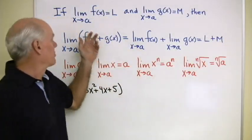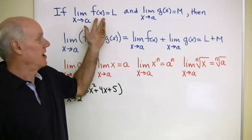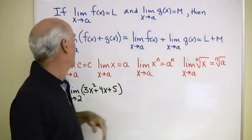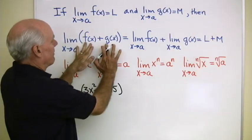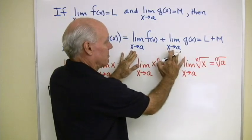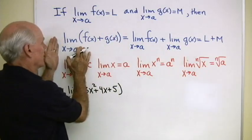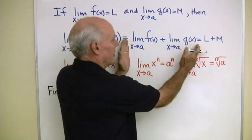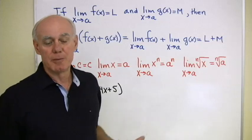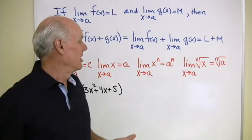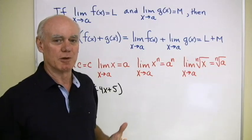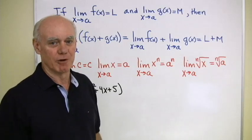Here's our first limit theorem. If the limit as x goes to a of f(x) is equal to L, and the limit as x goes to a of g(x) is equal to M, then the limit as x goes to a of f(x) plus g(x) is the sum of the limits — that is, L plus M. We can prove this using the definition of the limit, though I'm not going to do that here.